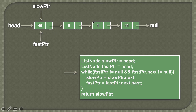The iteration of the slow pointer and fast pointer happens inside a while loop. This while loop has two conditions: first, we check that the fast pointer is not equal to null, and second, that fast pointer's next is not equal to null. If you see, the fast pointer is pointing to the first node which is not null, and fast pointer's next — the second node — is also not null. So the while loop gets executed.